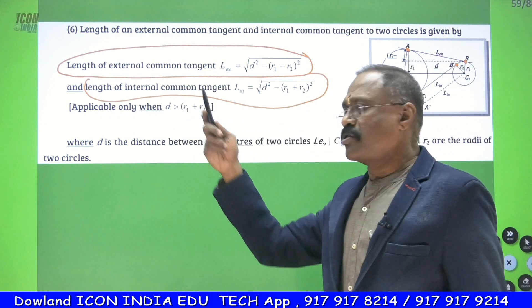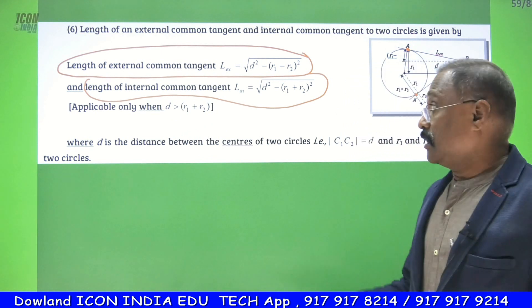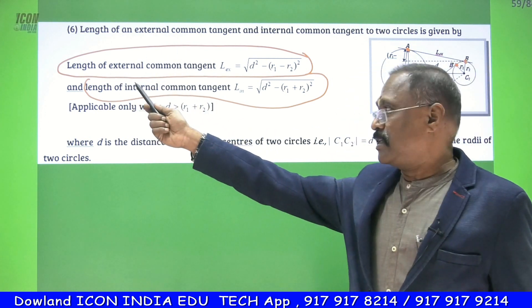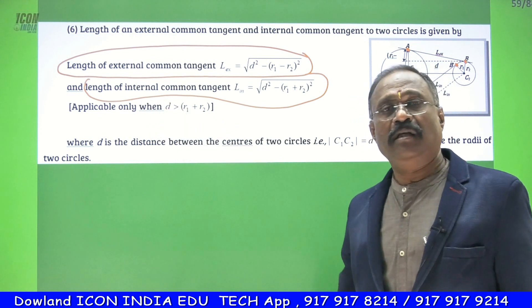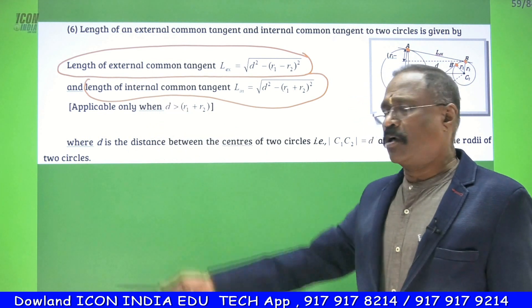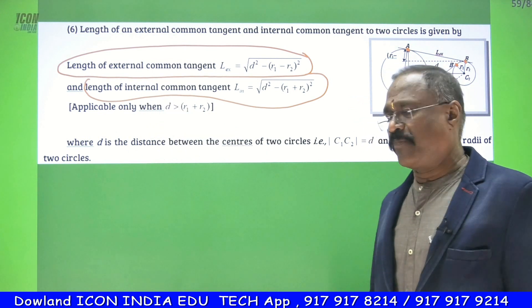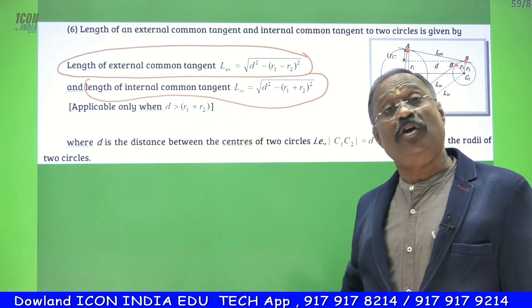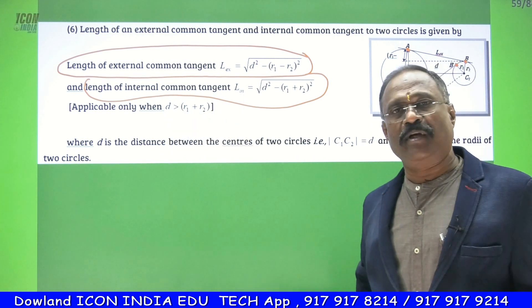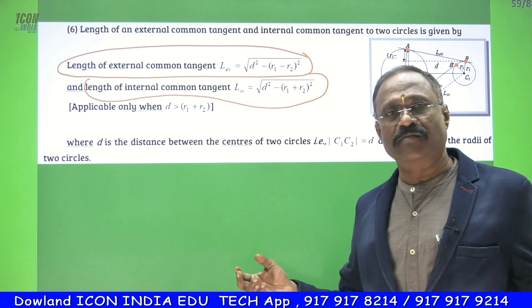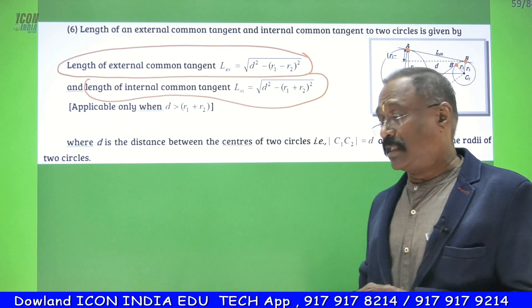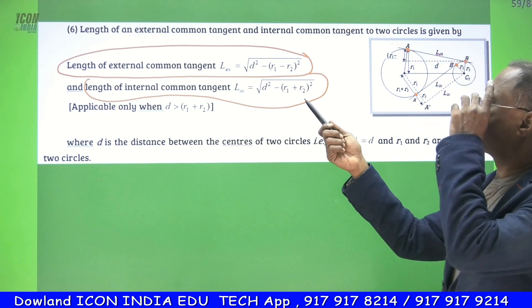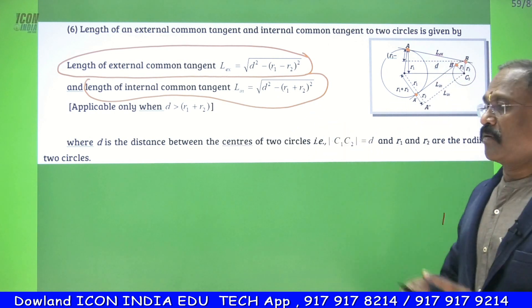The length of the internal common tangent, the length of the indirect common tangent — he is also calling it the external common tangent. Direct common tangent and external common tangent are the same. Internal common tangent, indirect common tangent, or transverse common tangent — these names all refer to one and the same thing. Its formula is root over D squared minus (R1 plus R2) whole squared.